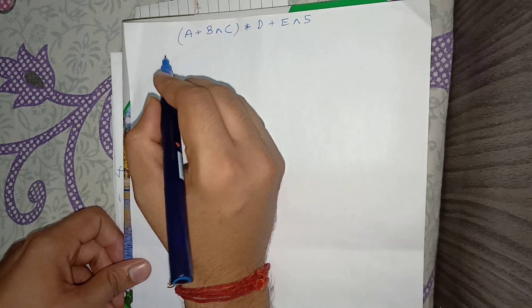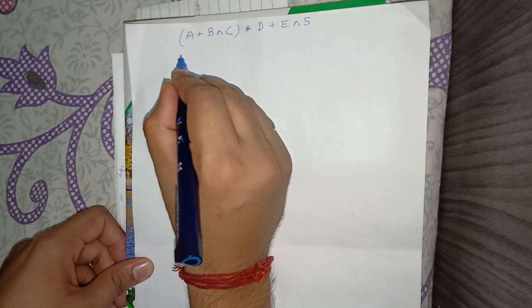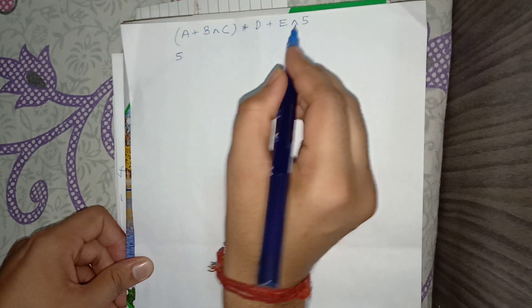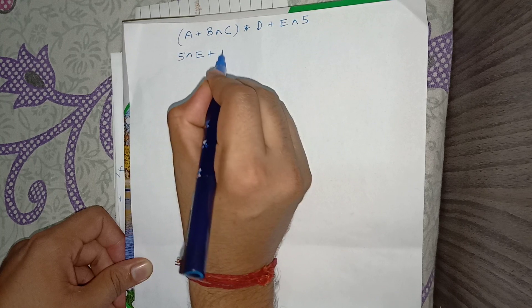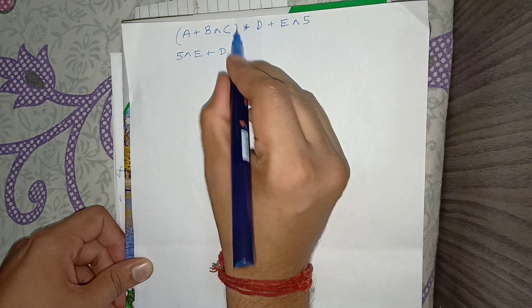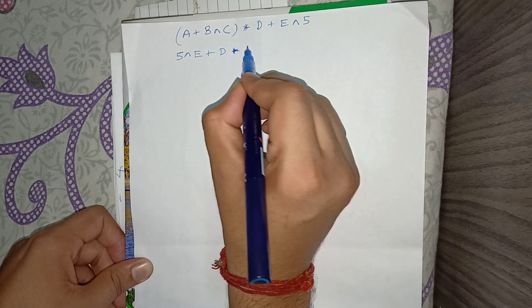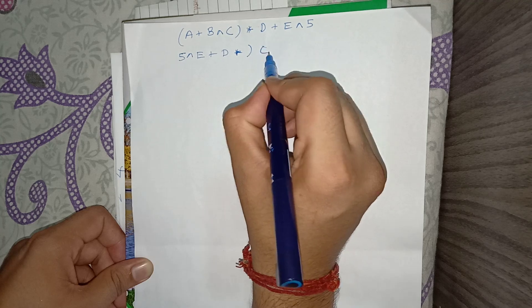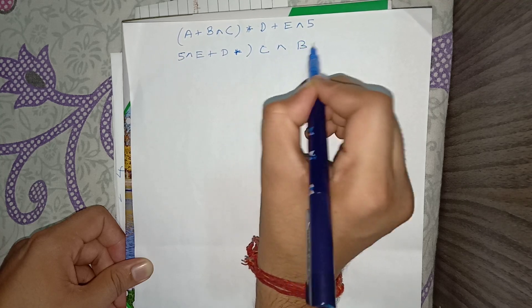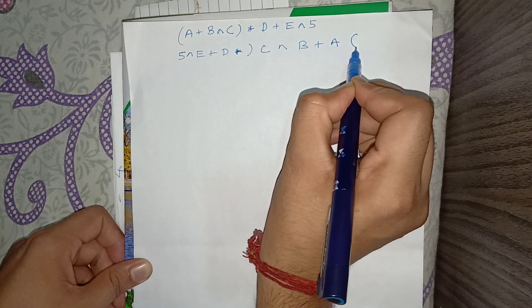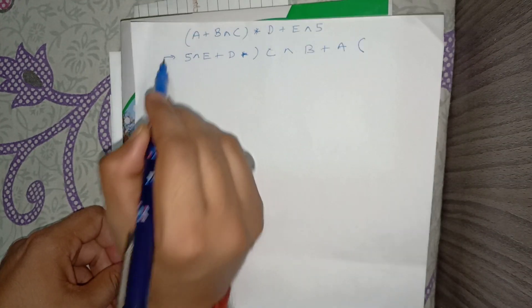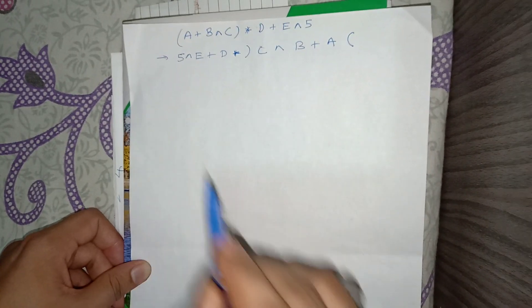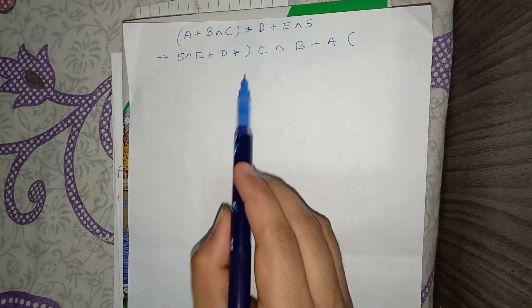On reversing the expression, we get: 5, then XOR, E, plus, D, into C, XOR, B, plus, A. So on reversing, we get the expression like this.